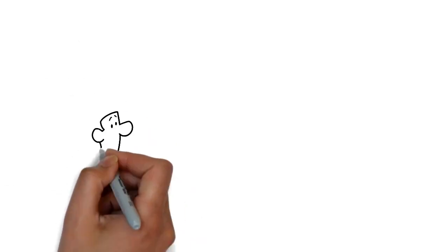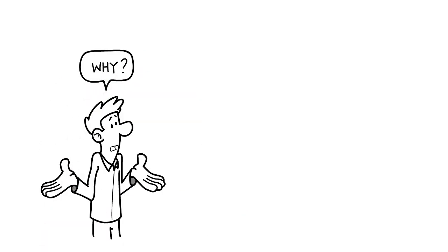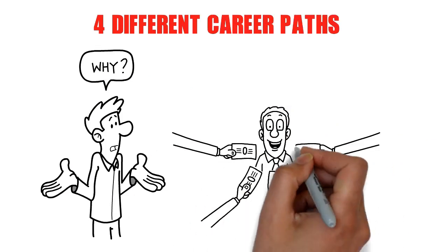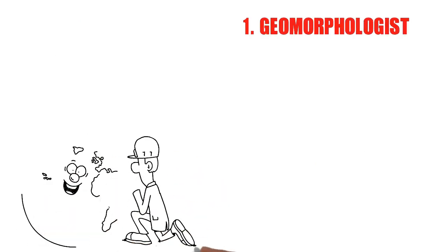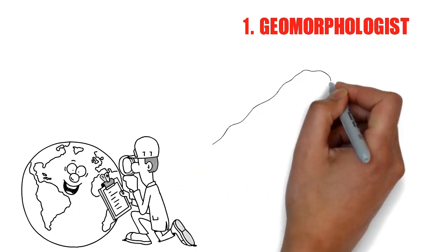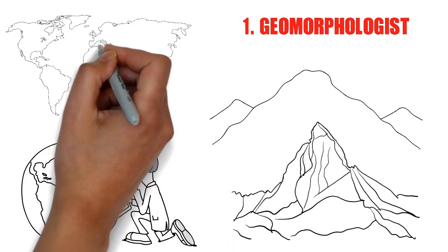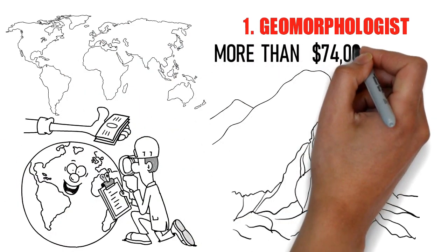By now, you must be wondering why you just learned this and what the purpose is. Well, I'm going to outline four different career paths that can pay you handsomely, so you don't feel like the content you've learned today will go to waste. First, you can become a geomorphologist — someone who studies the Earth's surface, like how mountains are formed and what separates different continents from each other. For this work, they are probably paid more than $74,000 a year.